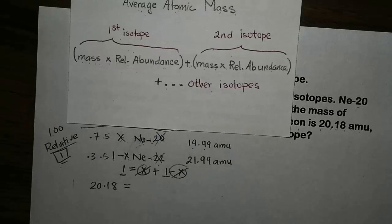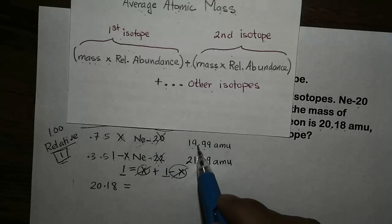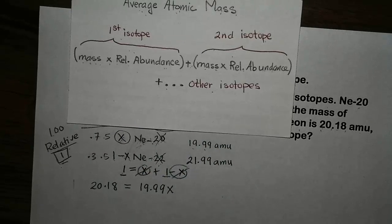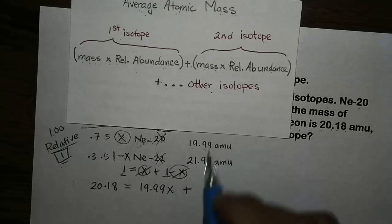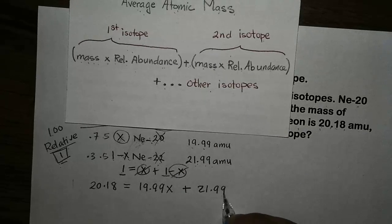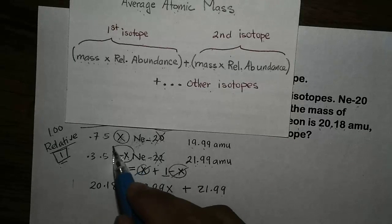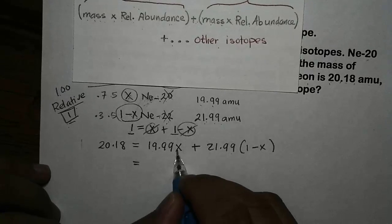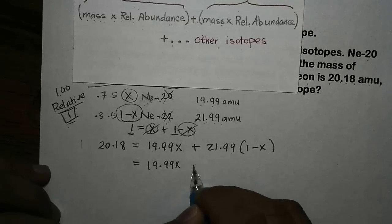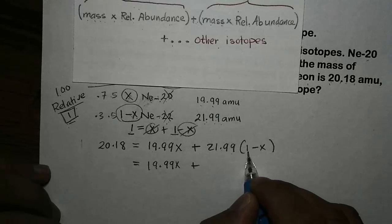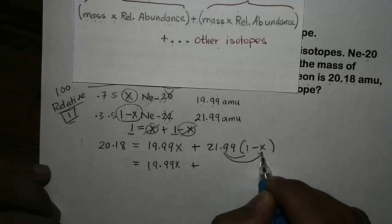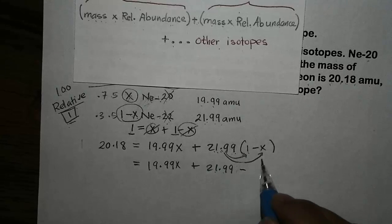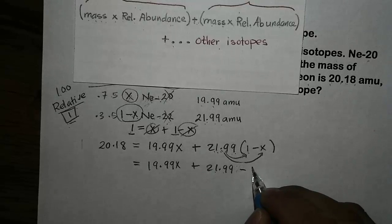For the first isotope, we have the mass equal to 19.99 times the relative abundance x. Then we add the next isotope: the mass is 21.99, times the relative abundance represented by (1 minus x). We can simplify this equation: we have 19.99x plus 21.99 times (1 minus x). Distributing: 21.99 times 1 is 21.99, and 21.99 times x is 21.99x.